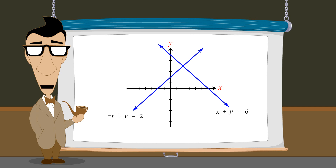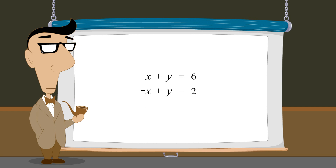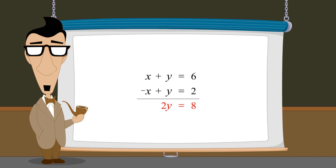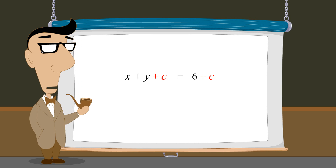The solution is represented graphically by the point where the graphs of the two equations intersect. As we saw, the elimination method involves adding the equations in the system to produce a new equation that eliminates one of the variables. The justification usually given for this process is that since it is okay to add the same thing to both sides of an equation, then two equations can be added.